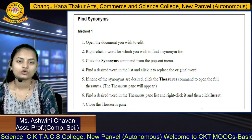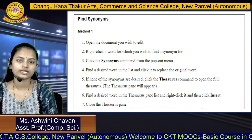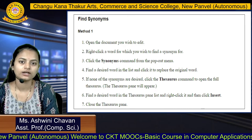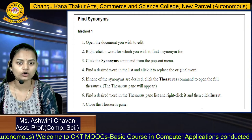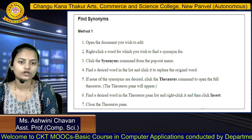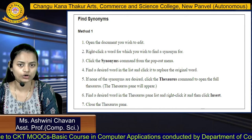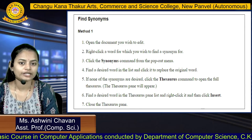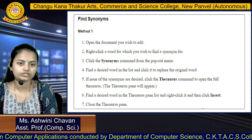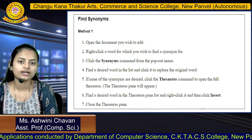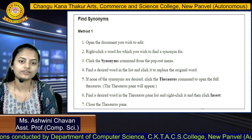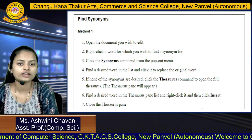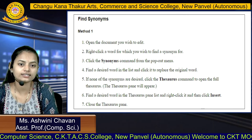Next we will see how to find synonyms. There are two methods. Method 1: after opening the document, right-click on a word for which you want to find a synonym, then click the Synonyms command from the pop-out menu. It will give you options showing similar words. Find the desired word in the list and click it to replace the original word.